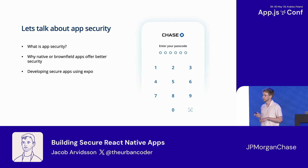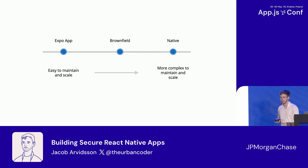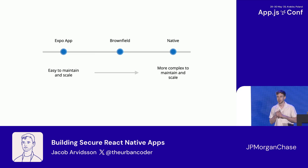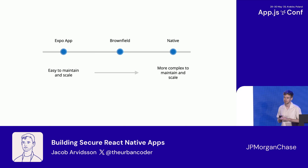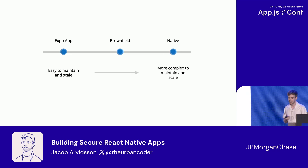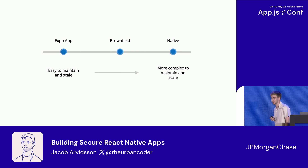First I want to talk about Expo versus native. Expo is super easy to maintain and scale. With Expo you're writing code once and deploying it to all platforms. It also has Continuous Native Generation, which means you're not even maintaining your native projects — these are automatically generated every time you do a build.